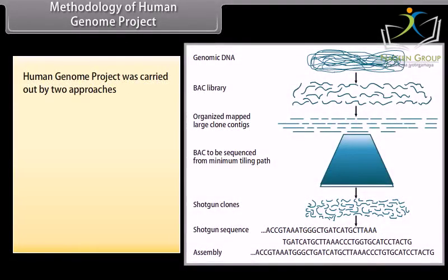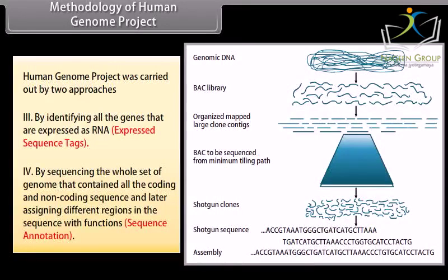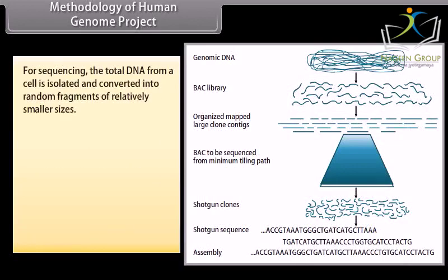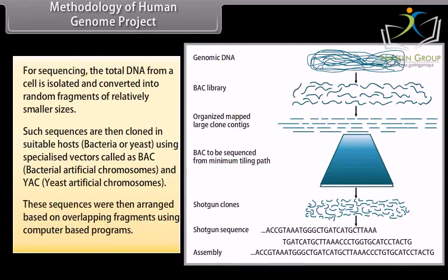The Human Genome Project was carried out by two approaches: by identifying all the genes that are expressed as RNA — expressed sequence tags — and by sequencing the whole set of the genome containing all coding and non-coding sequences and later assigning different regions with functions. For sequencing, the total DNA from a cell is isolated and converted into random fragments of relatively smaller sizes. These are cloned in suitable hosts — bacteria or yeast — using specialized vectors called BAC (bacterial artificial chromosomes) and YAC (yeast artificial chromosomes). These sequences were then arranged based on overlapping fragments using computer-based programs.